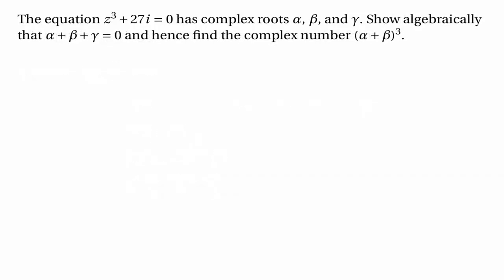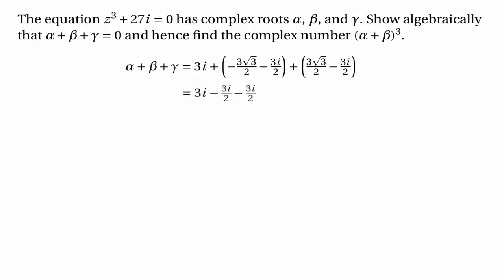The next part of the question tells us to show that alpha plus beta plus gamma equals zero, and to use that result to find alpha plus beta all cubed. We can show that alpha plus beta plus gamma equals zero simply by adding up our answers. If you add them up, you'll see that it cancels to 3i minus 3i over 2 minus 3i over 2, which comes to zero.